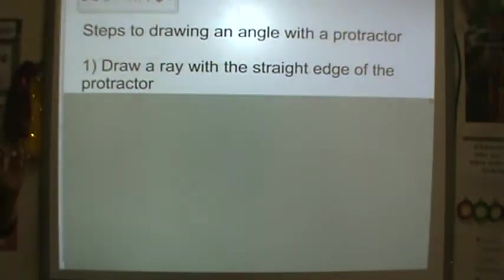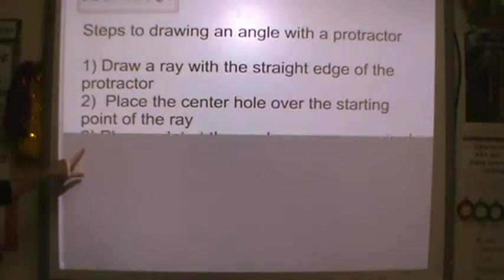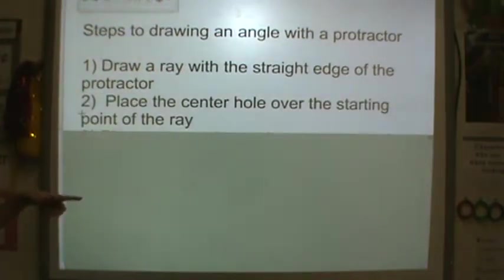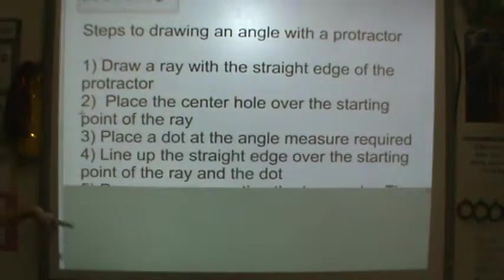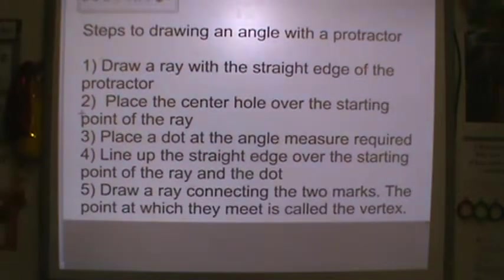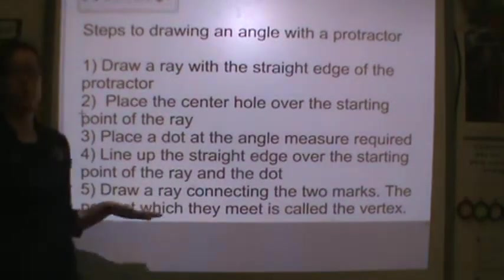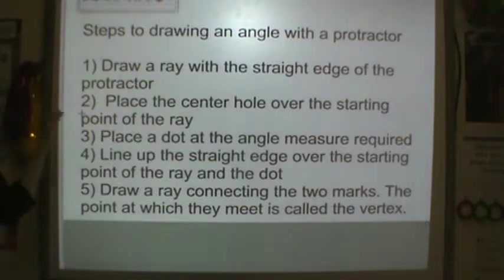If you want to draw an angle with a protractor, you draw a ray with the straight edge. You place the center hole over the starting point, then place a dot at the angle measure required. You line up the straight edge over the starting point of the ray and dot, and draw a line connecting the two marks where they meet. That's called the vertex. Again, we're going to do this at school tomorrow. Don't worry if you don't know exactly what's going on. I just need you to have these directions in your notebook.